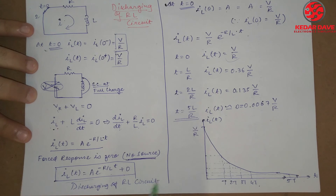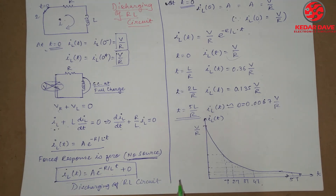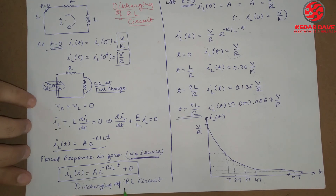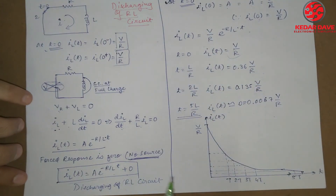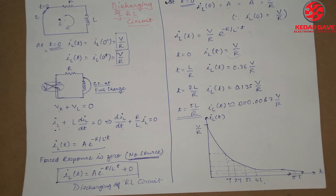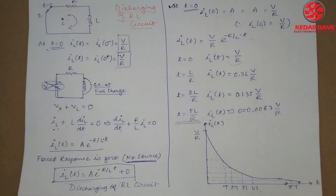This is the discharging equation of the inductor. Note that R is a linear circuit element, and both the resistor and inductor are linear elements. To understand them, we need to analyze the time domain analysis. This is how the complete RL circuit can be understood. I hope all of you are clear with the idea. If you gained some knowledge from this video, please like, share, and subscribe to my channel. Thank you for watching.